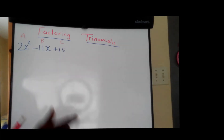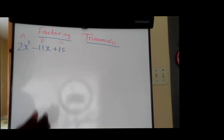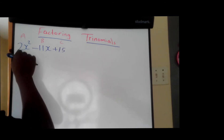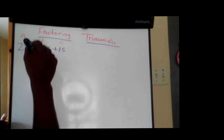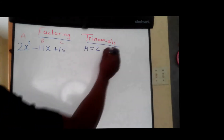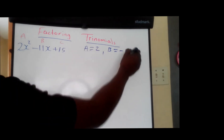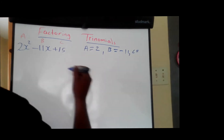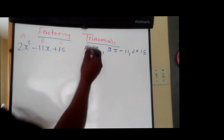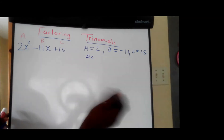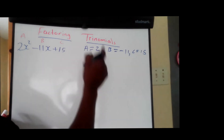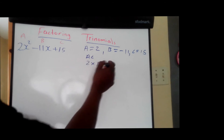We have three terms, and we want to have four terms to solve this problem. So what I am going to do now is to write down the value for each term. A equals 2, since we have a 2 before the X. B equals negative 11, and C equals 15. Now that we know the value of each term, we are going to multiply A times C. So A is 2 times C which is 15.